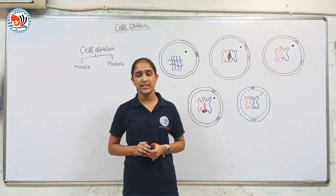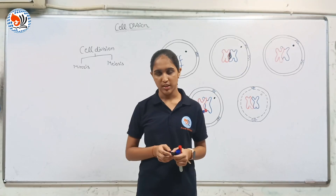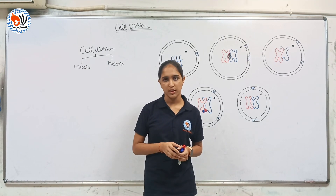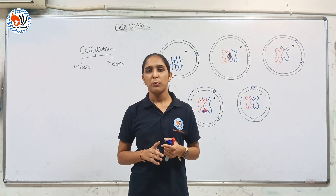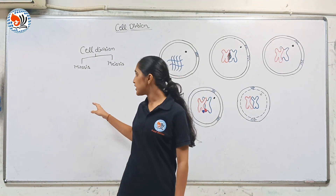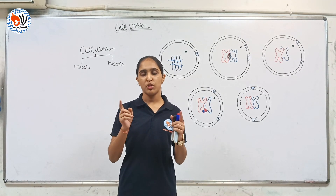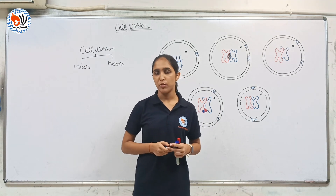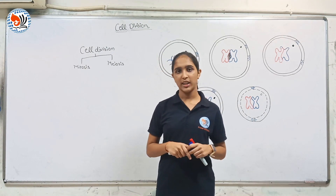Cell division is done in two steps: karyokinesis, which is nucleus division, and cytokinesis, which is cytoplasmic division. Karyokinesis is done in four phases: prophase, metaphase, anaphase, and telophase. Cytoplasmic division in animals is done by formation of a notch, and in plants it is done by formation of a cell plate. Now let us see how cell division occurs in meiosis.